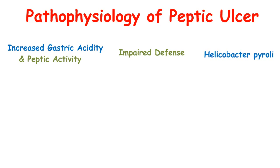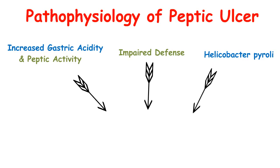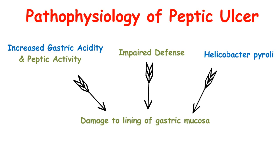Another factor is Helicobacter pylori, a microorganism that can also cause Peptic Ulcer. All three factors — together or individually — may lead to damaging of the lining of our gastric mucosa. Eventually, that damage leads to ulceration, which is Peptic Ulcer.